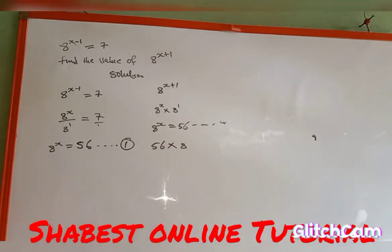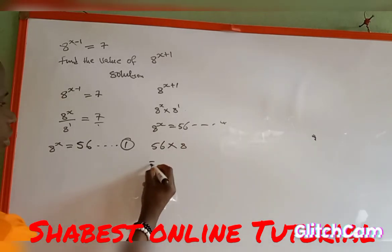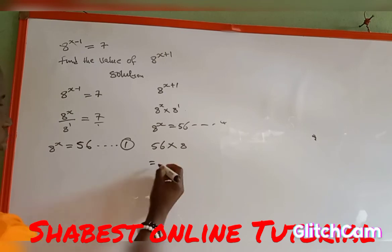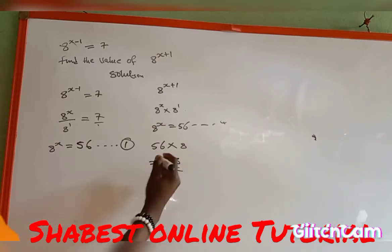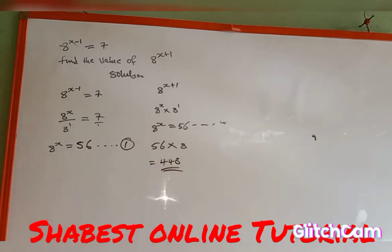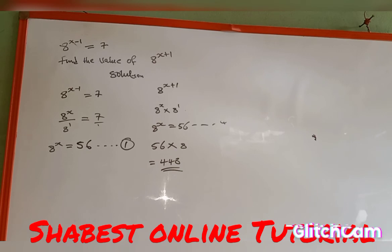56 multiplied by 8 now will be equal to 408. So this is the value of 8 to the power of s plus 1. Thanks for watching, and don't forget to subscribe to my YouTube channel.